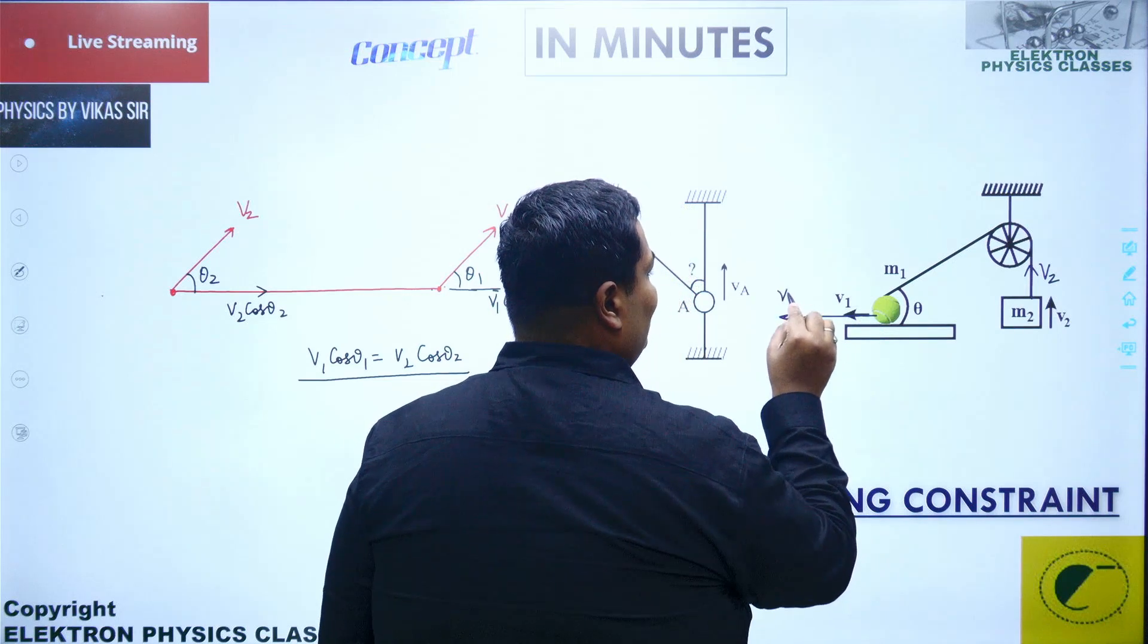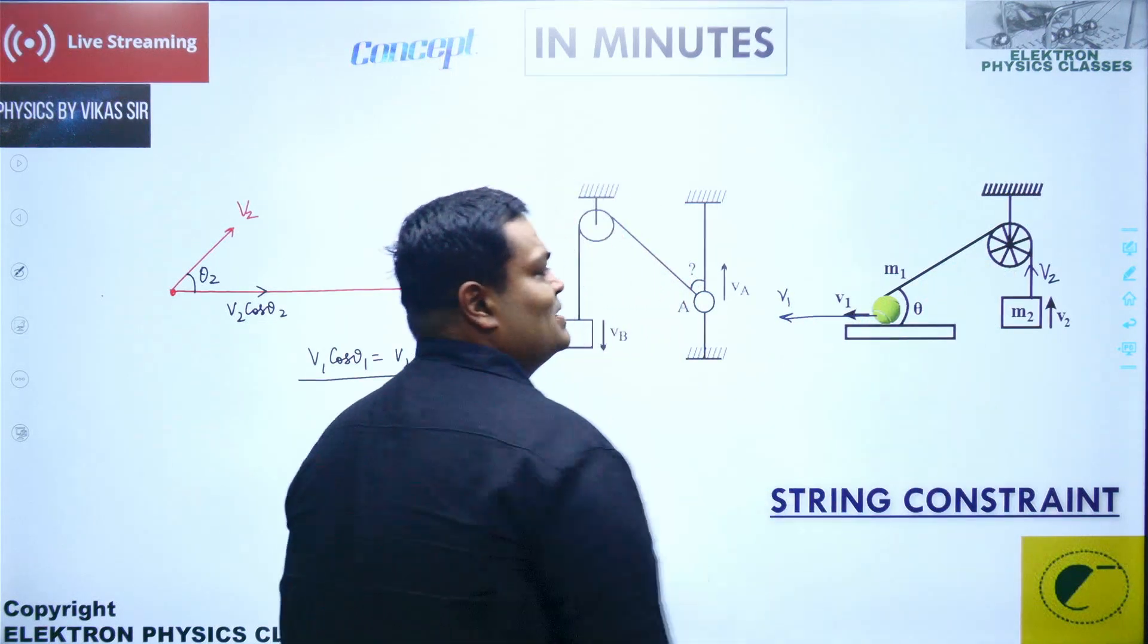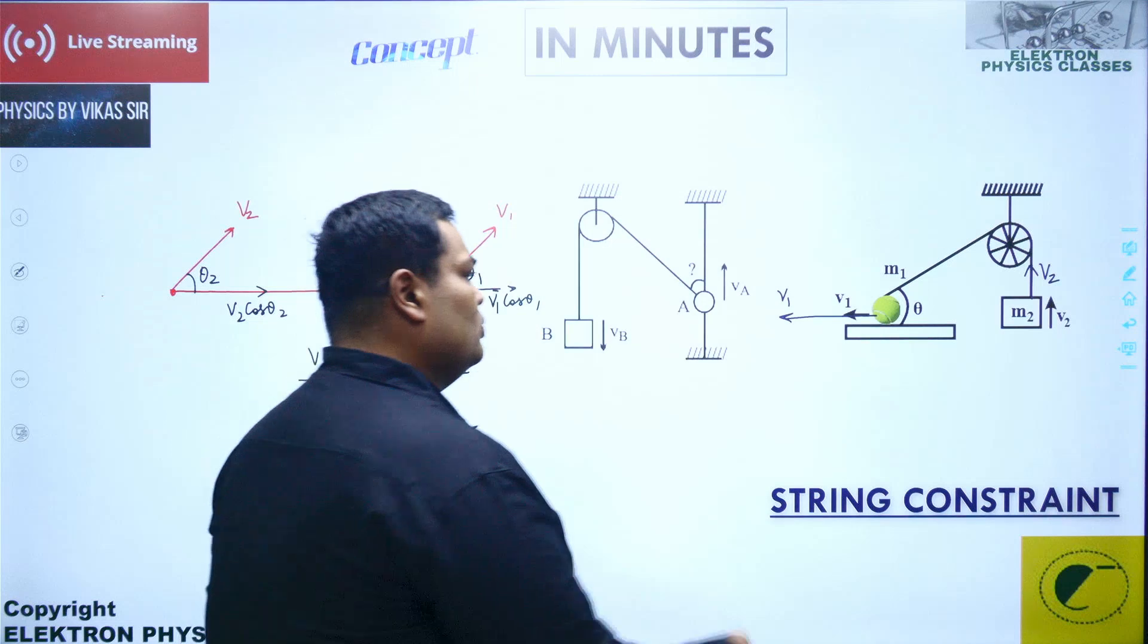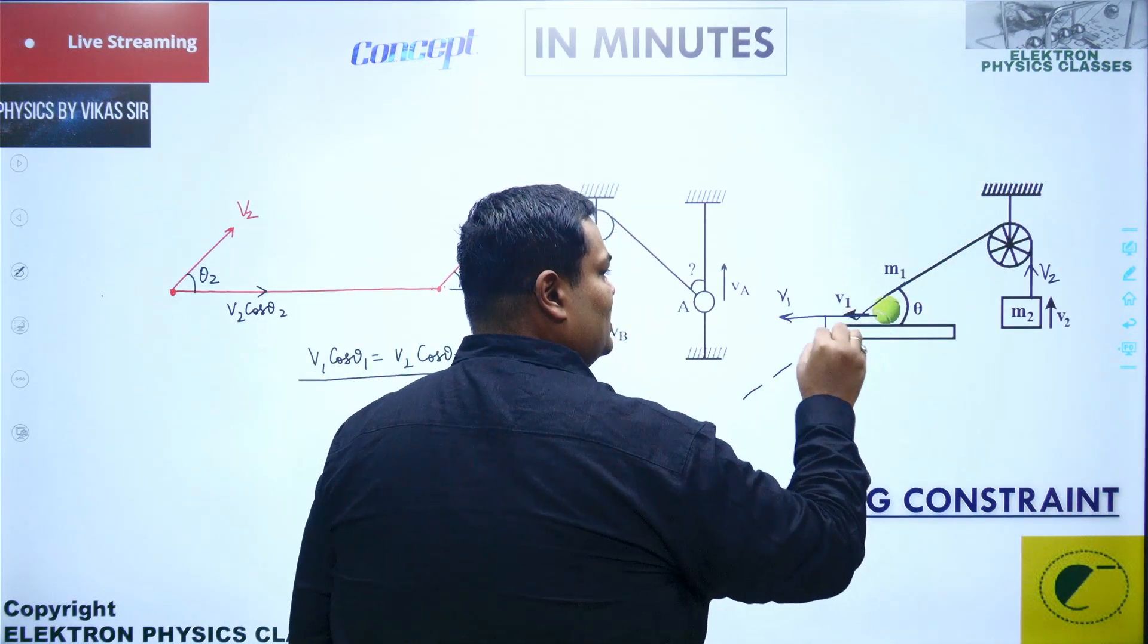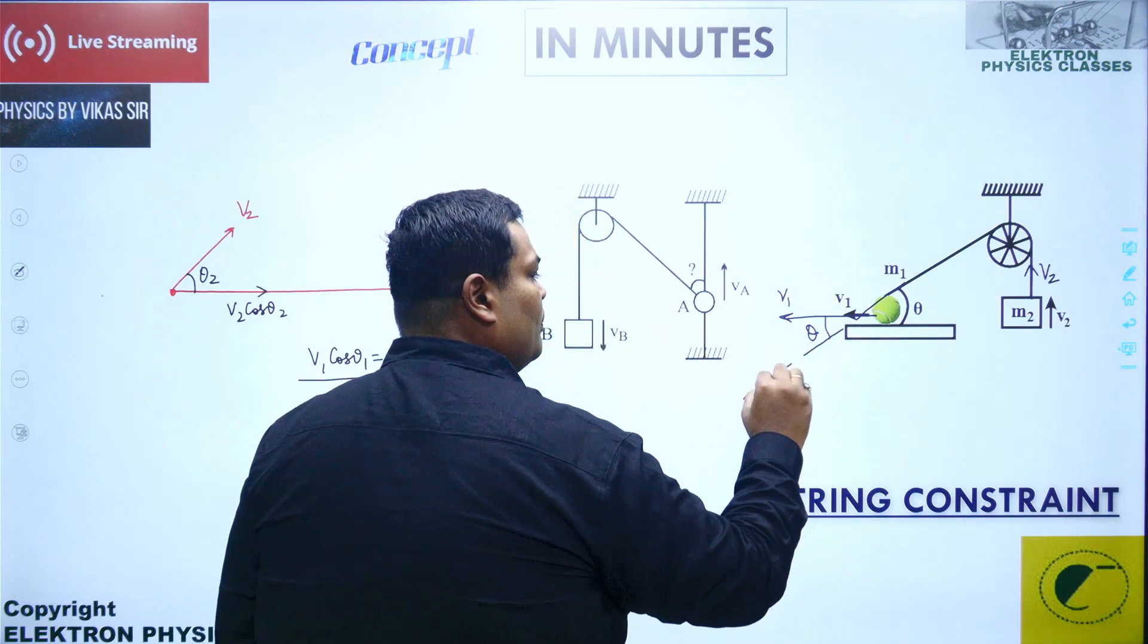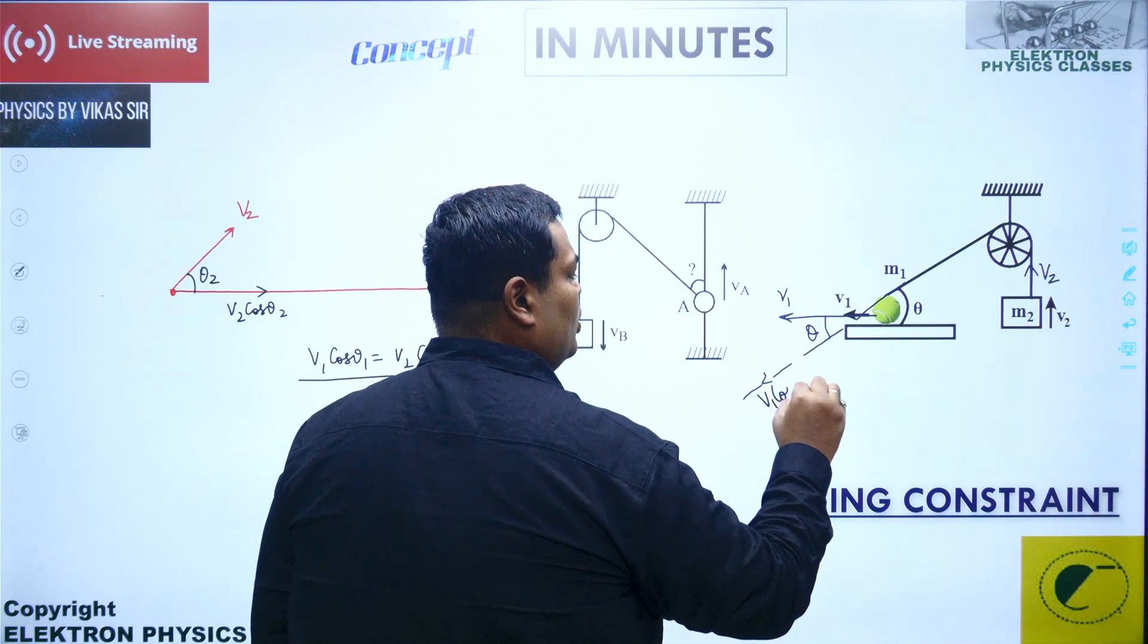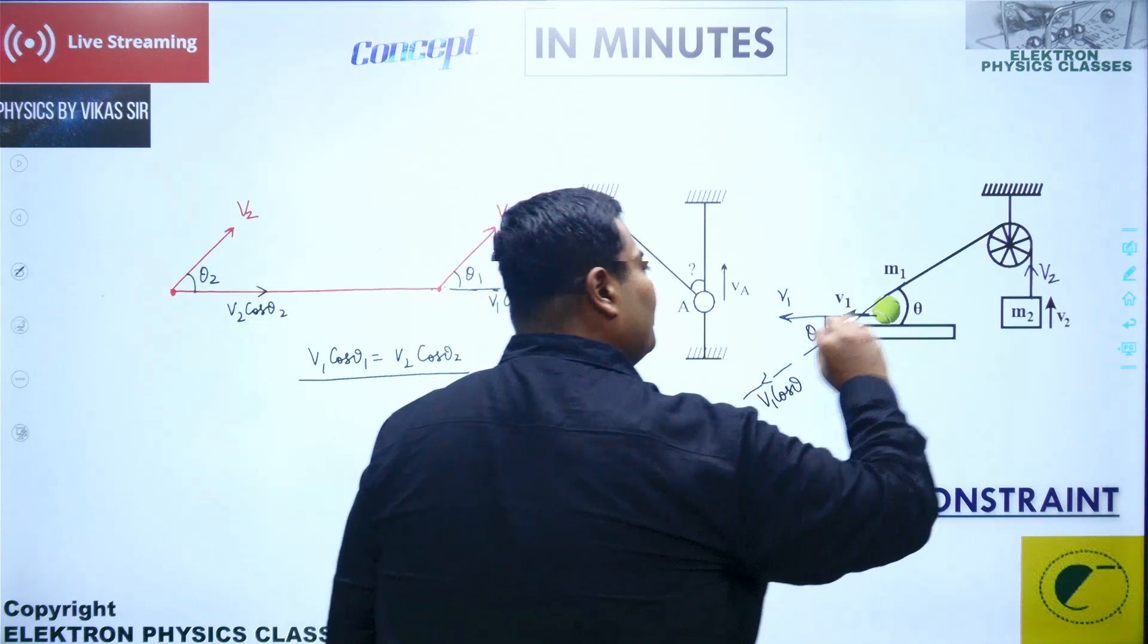It is not along the string. So what do we do? We extend this line over here, which is a string line. Here this angle is theta, so this angle is theta. Take the component of this over here, that becomes v1 cos theta. And then the component along the string should be same.